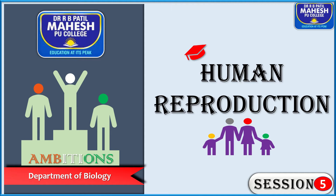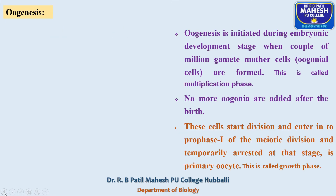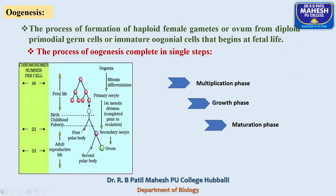One contrasting difference between spermatogenesis and oogenesis is that spermatogenesis starts after attaining sexual maturity, whereas the oogenesis process starts during fetal life and completes after attaining sexual maturity.